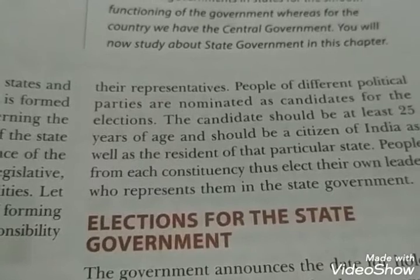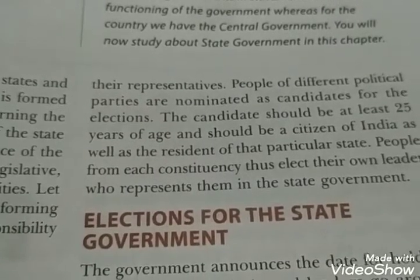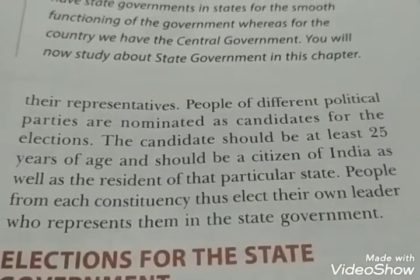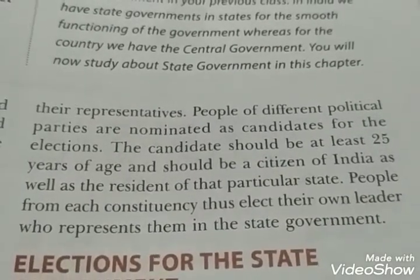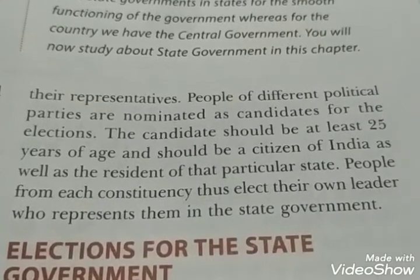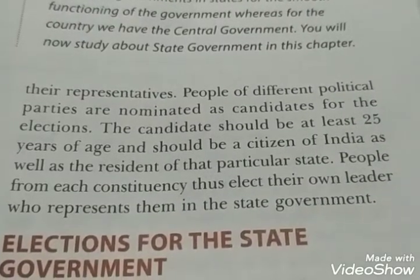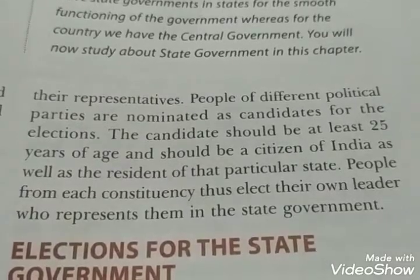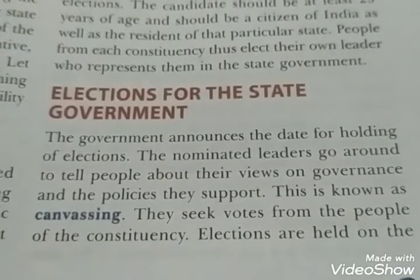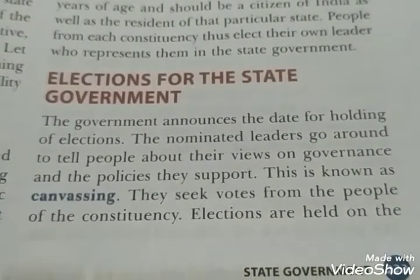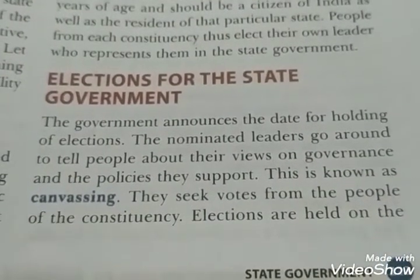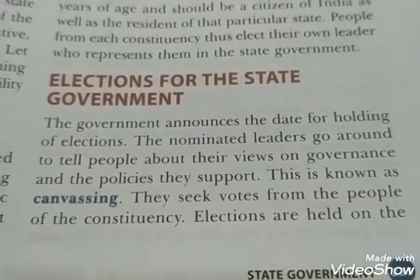People from each constituency elect their own leader. Candidates may be elected through the election process. I will show you a map of India to make it clear — different constituencies are divided within states. For example, Uttar Pradesh has 403 constituencies.